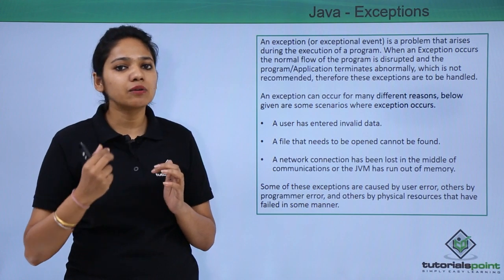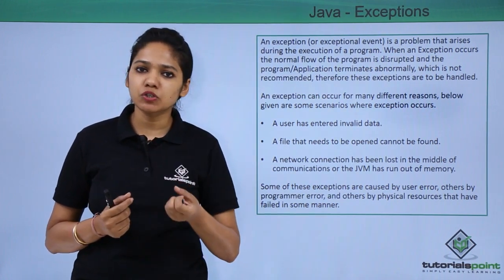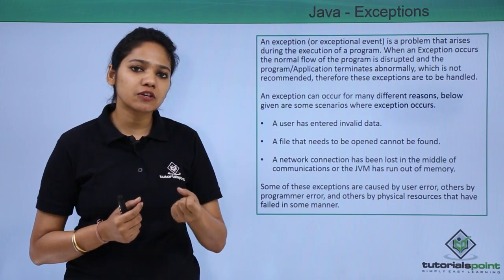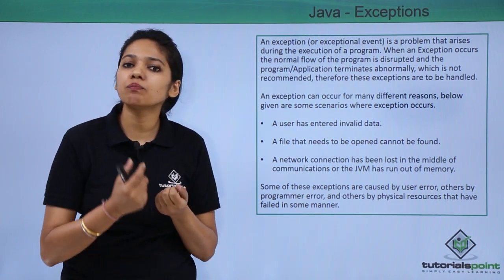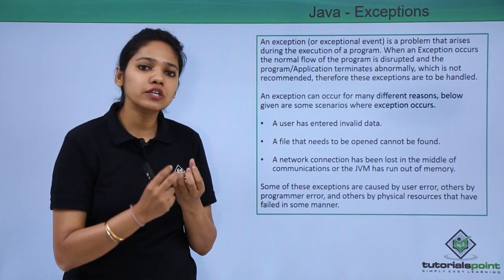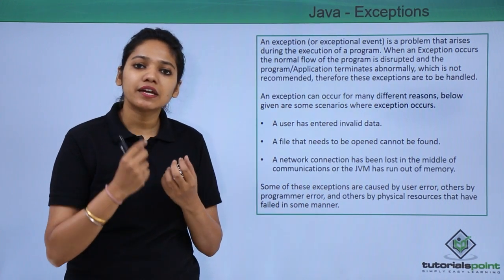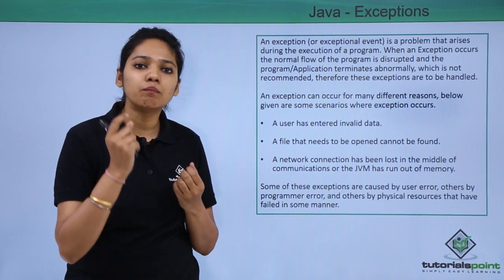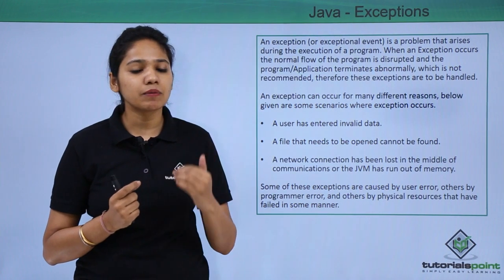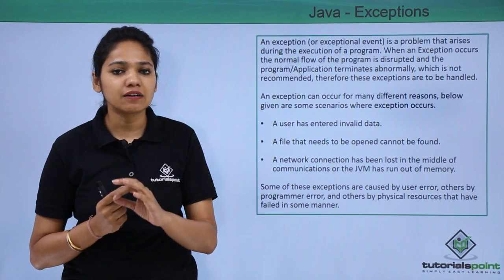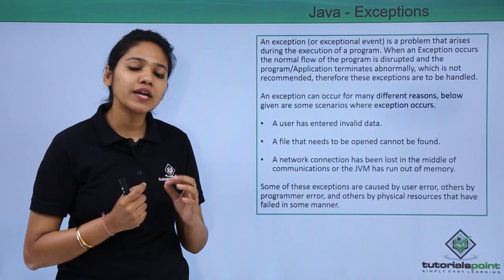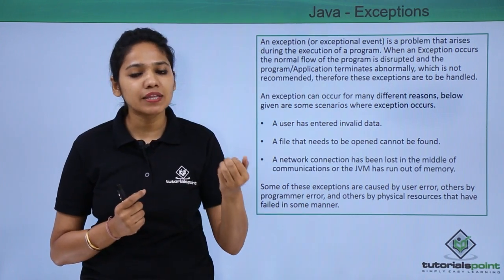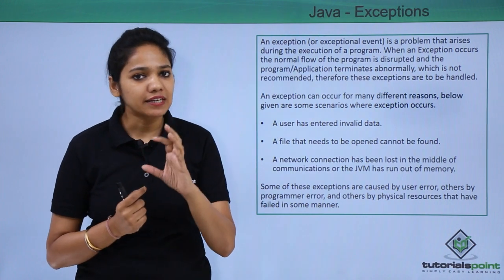Once the exception is thrown, it needs to be handled by someone. Now you know what kind of exception you have, in which method the exception occurred, and what is the state of the program. After knowing what kind of problem you are facing, you need to resolve that problem — that is, you need to handle the exception. These exceptions are handled by a block of statements called the exception handler.